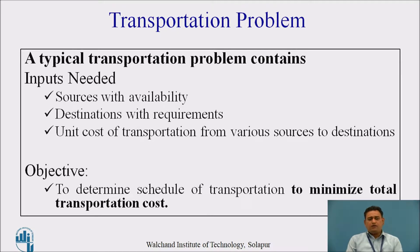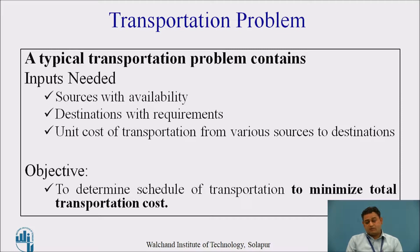The transportation problem should consist of the following data: source with availability, destination with requirement, and unit cost of transportation from various sources to destinations. The final objective of the transportation problem is to make a schedule of transportation of the commodity from the sources to the destinations with the minimum transportation cost.